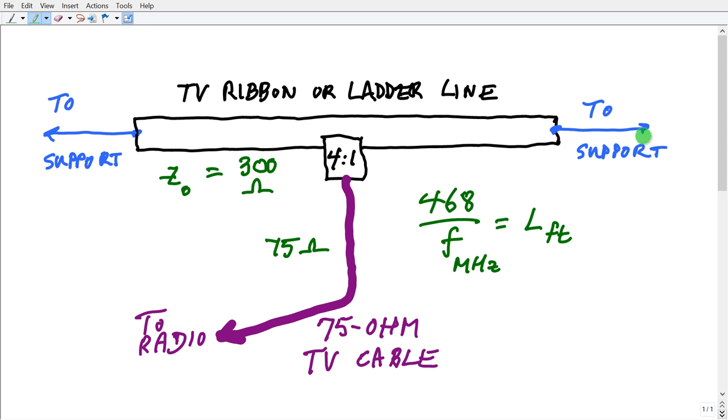The supports: you can use nylon rope. Be sure to short out the ends of your open wire or ladder line or TV ribbon. With TV ribbon, you can just drill a hole in the dielectric material itself and use nylon cord or strong non-conductive twine to lead to your supports. As with any dipole, it will work best if it is horizontal, fed at the center.